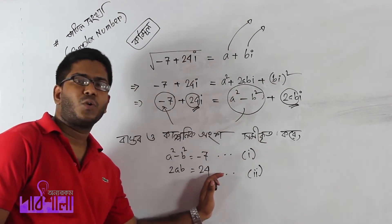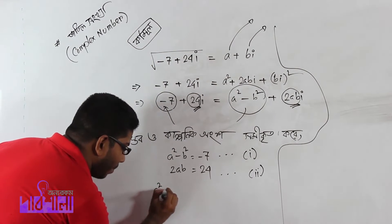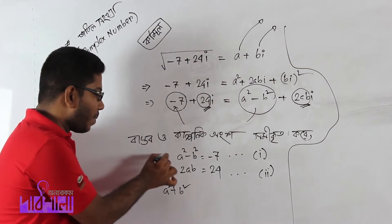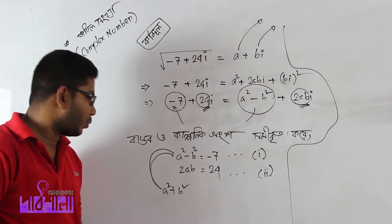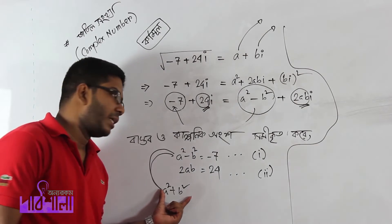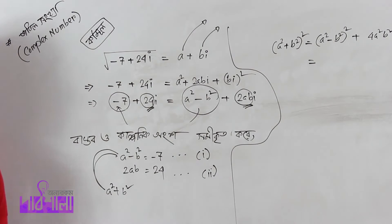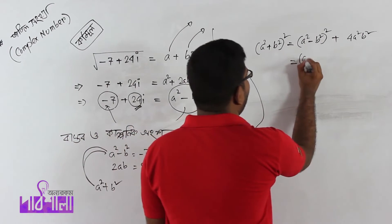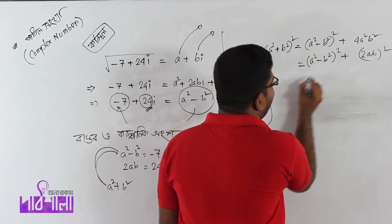A squared minus b squared equals minus 7, and twice ab equals 24. Now if we choose a squared plus b squared, we need to compute a squared minus b squared whole square plus 2ab whole square, which gives a squared plus b squared whole square.